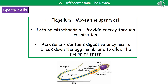The second adaptation is that it's got lots of mitochondria, which you can see in the mid piece in the diagram. Because the sperm cell has to carry out quite a big journey, it's going to need a lot of ATP. All of those mitochondria can carry out respiration, which as we know generates ATP.